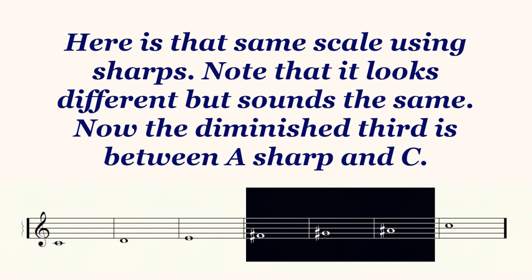Here is that same scale using sharps. Note that it looks very different but sounds the same. Now the diminished third is between A sharp and C.